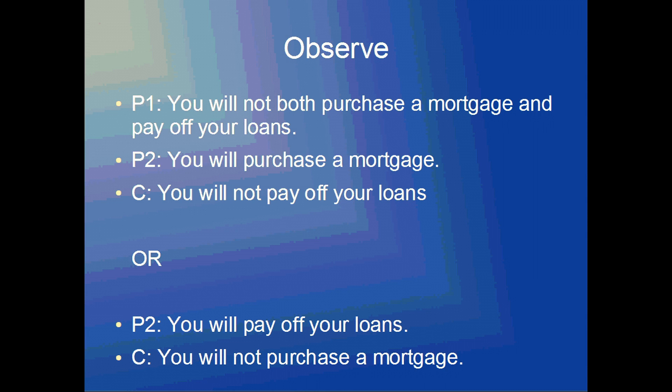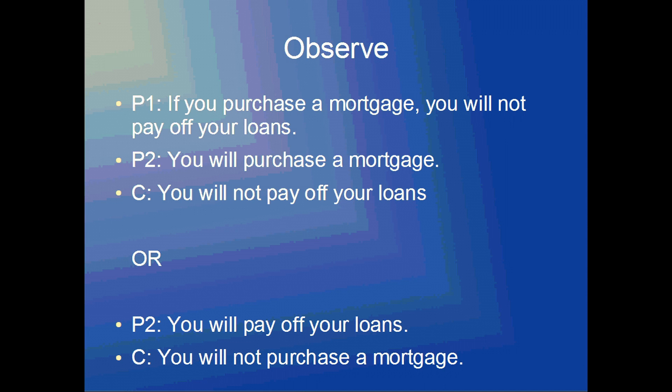Now if you want to convert this to a conditional syllogism, this is what it will look like. Premise one: if you purchase a mortgage, you will not pay off your loans — purchasing a mortgage is supposed to cause you to not pay off your loans. In the second premise, we confirm that you will purchase a mortgage, so the conclusion is that you will not pay off your loans. Or, if we know instead that you will pay off your loans, then we can infer that the antecedent — that you purchase the mortgage — has not occurred, so the conclusion becomes: you will not purchase a mortgage.